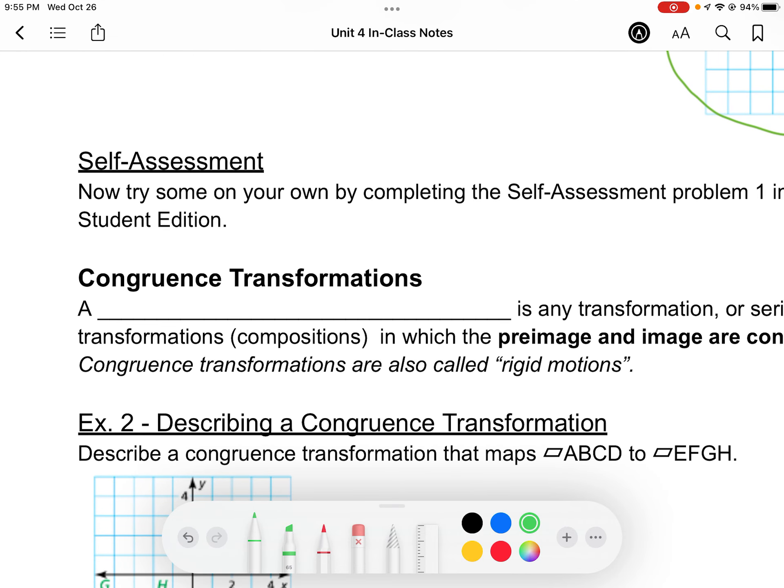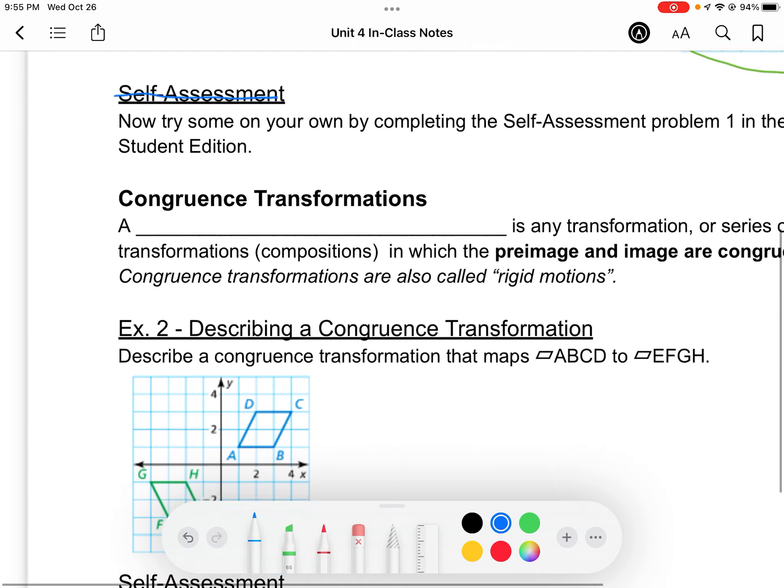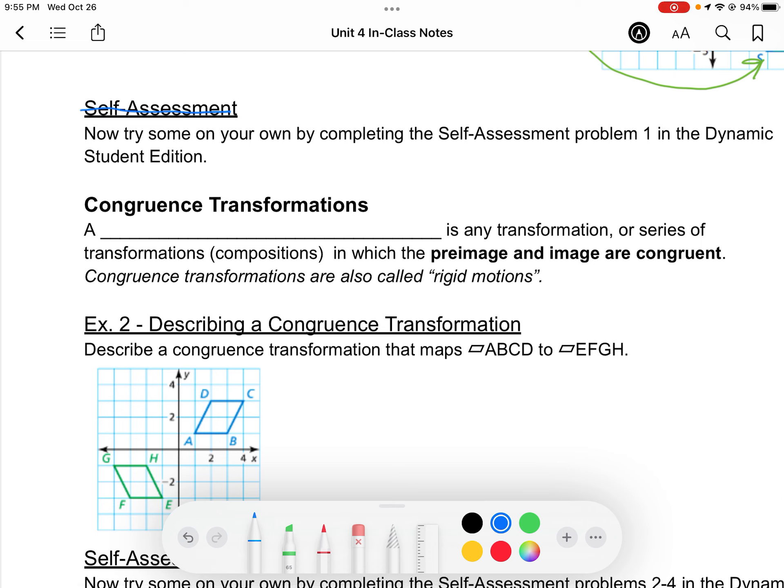For the sake of time and because we're doing this through a video, we're going to skip the self-assessment part here. And we're going to talk about what a congruence transformation is. A congruence transformation is any transformation or series of transformations, which is what we call compositions, in which the pre-image and image are congruent. Another phrase we use for congruent transformations is the phrase rigid motions.